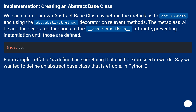Creating an Abstract-based class: We can create our own Abstract-based class by setting the metaclass to abc.ABCMeta and using the abc.abstractmethod decorator on relevant methods. The metaclass will add the decorated functions to the __abstractmethods__ attribute, preventing instantiation until those are defined.